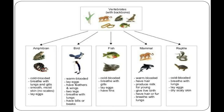Vertebrates are divided into five groups: fish, birds, reptiles, amphibians, and mammals. First, we will discuss fish. Fish are cold-blooded animals, meaning their body temperature changes according to the surrounding temperature. Their bodies are well adapted for life underwater — they breathe by absorbing oxygen dissolved in water through their gills and do not have lungs. They have fins and tails to help them swim.